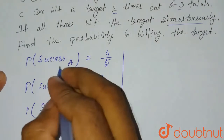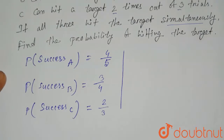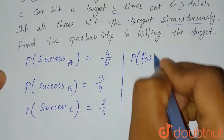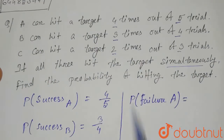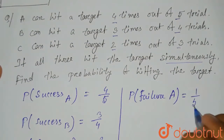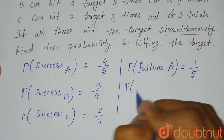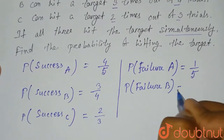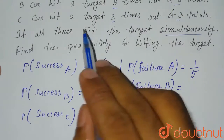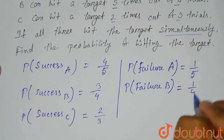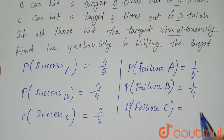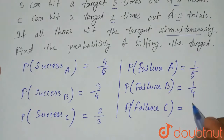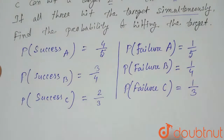So we have found the probability of success of A, B, and C. Now if we find the probability of failure: the probability of failure of A equals 1 by 5, since A misses 1 time out of 5 trials. Similarly, the probability of failure of B equals 1 by 4, since B can't hit 1 time out of 4. And the probability of failure of C equals 1 by 3, since C can't hit 1 time out of 3.